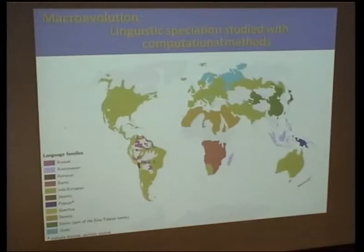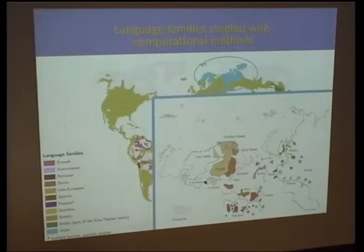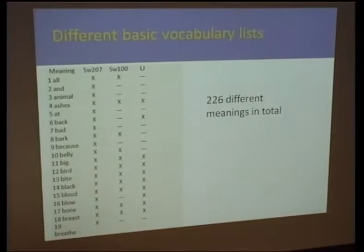Now we go on to the macro-evolution part of the story. Here you can see a world map with different colors showing language groups that have been studied with computational methods. We are studying Uralic languages — shown up here — and these are the 17 languages we used in our analysis. Finland is here, which is the most important thing.